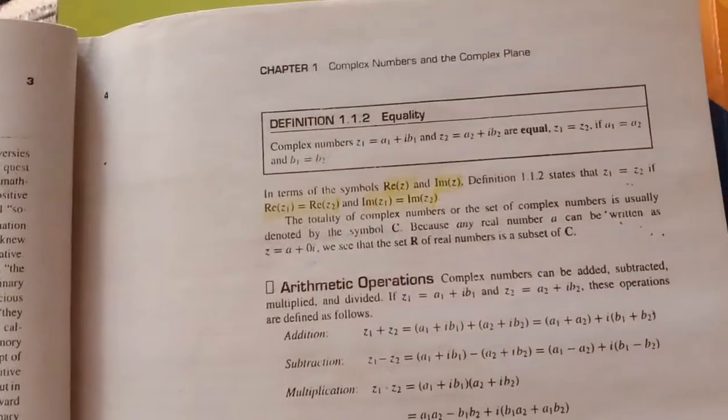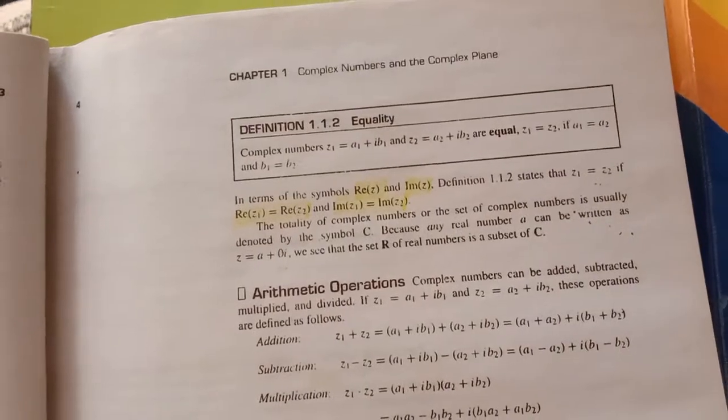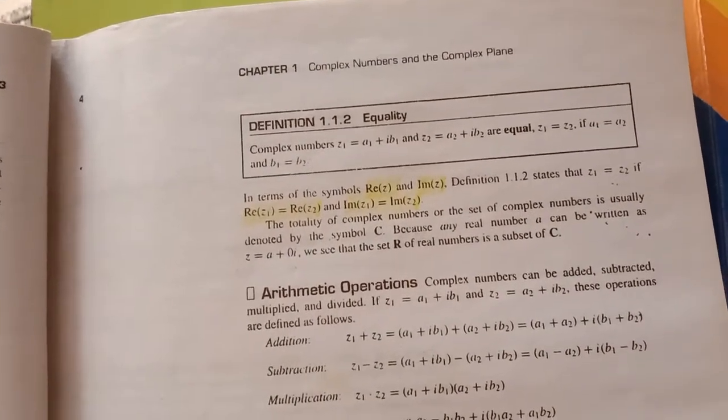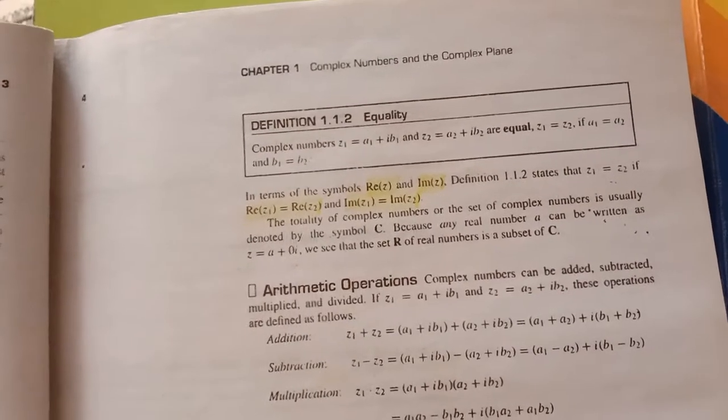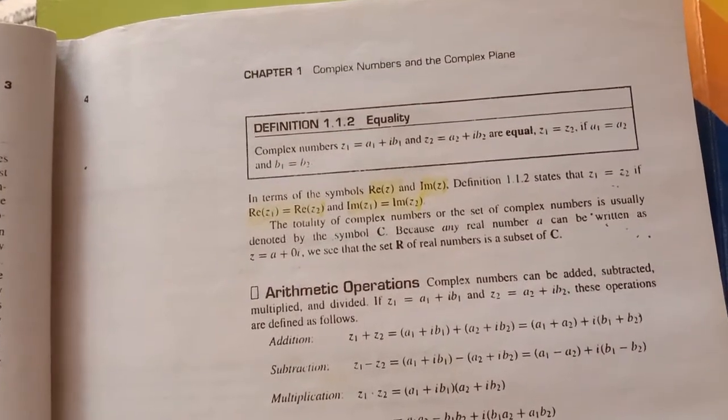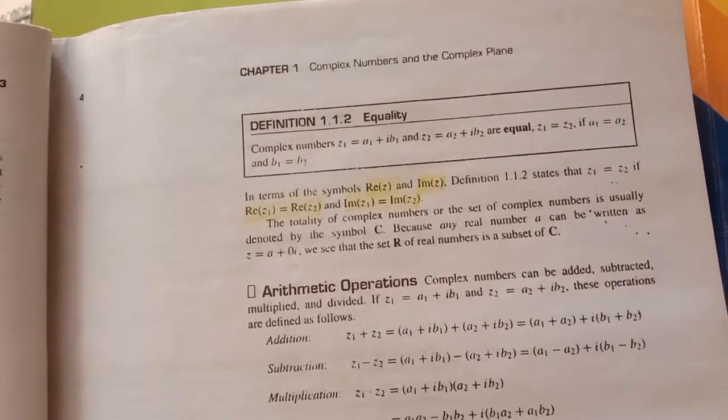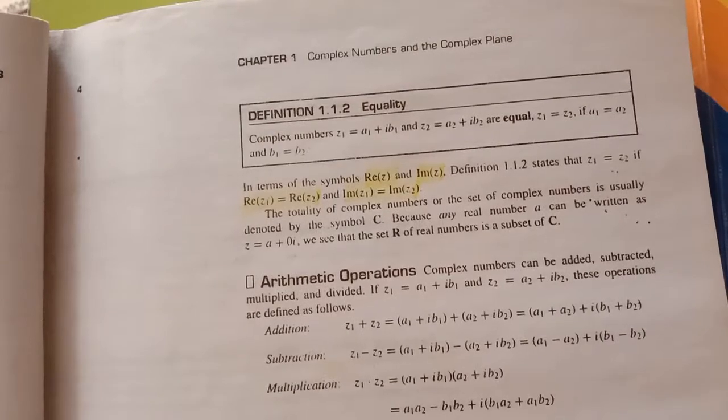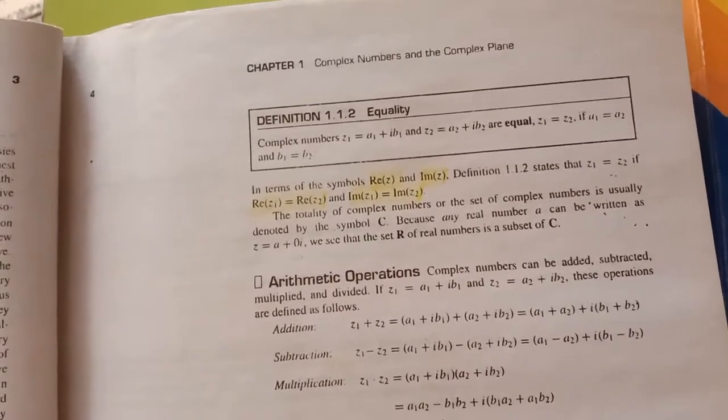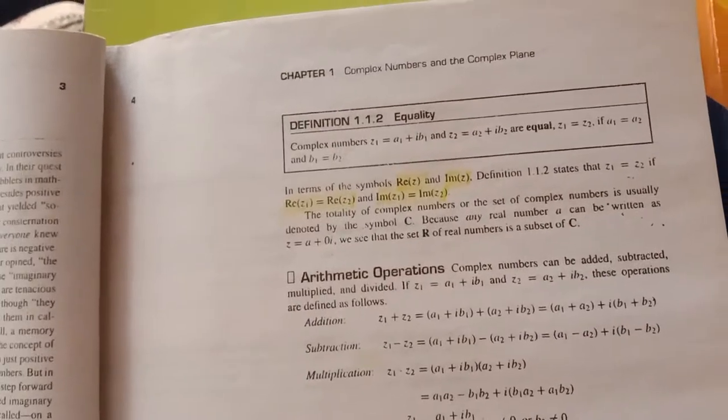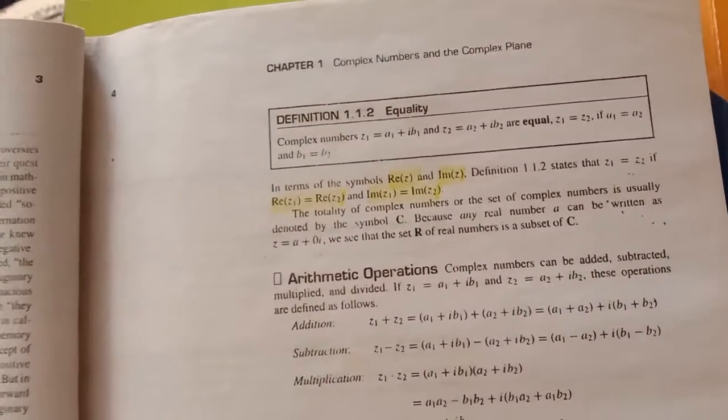Matlab do complex number kab equal honge jab z1 aur z2 ke real parts equal ho aur imaginary parts bhi equal ho. In terms of the symbols, ham yeh sara likhenge RE of z and IM of z. z1 equal to z2 kab equal honge jab RE of z1 equal to RE of z2 and IM of z1 equal to IM of z2.